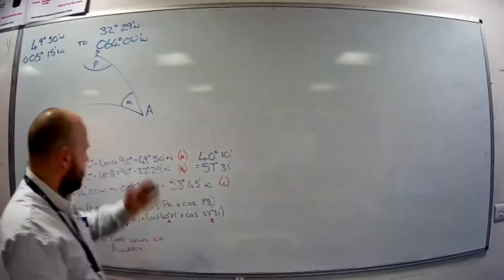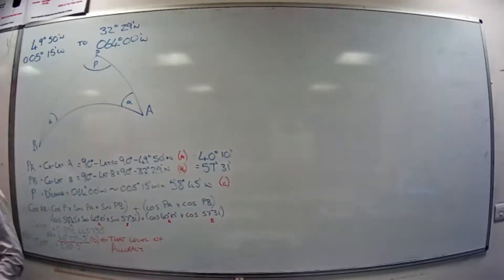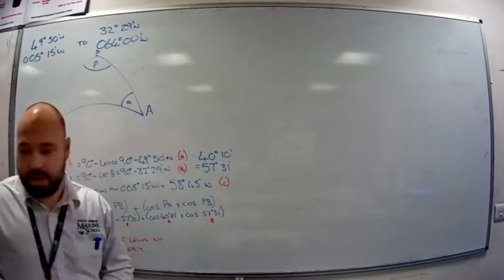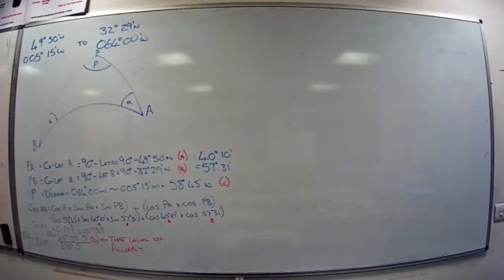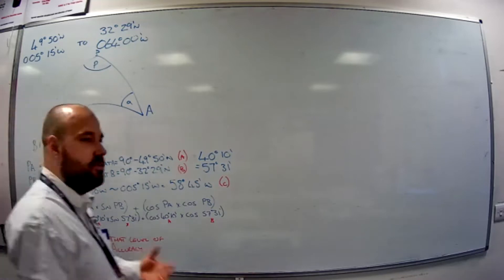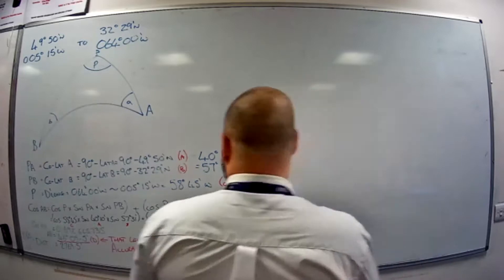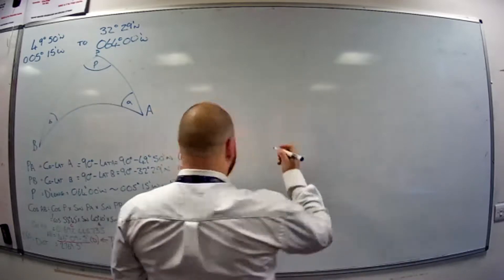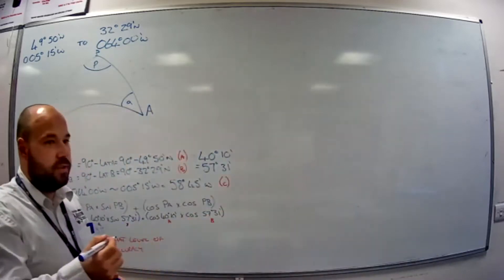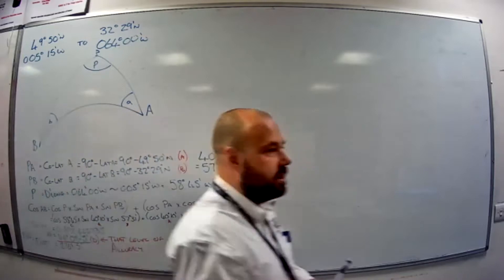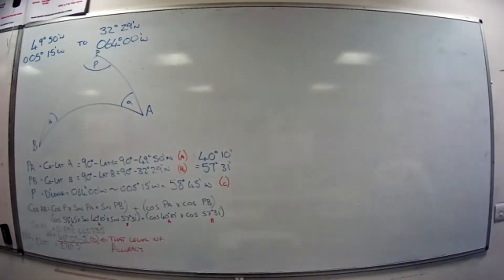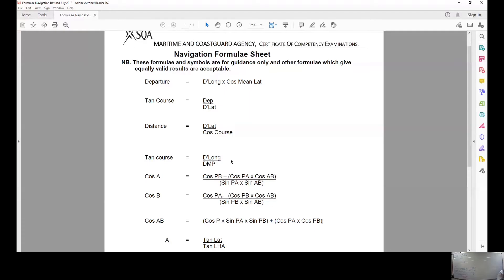What we're going to do now is carry on with the calculation we've just done and find the initial and final course. The initial or final course is often asked, and you need to find one of them in order to get the position of the vertex. The formula for initial and final course follows the same concept as the formula sheet and is just derived from the cosine formula.